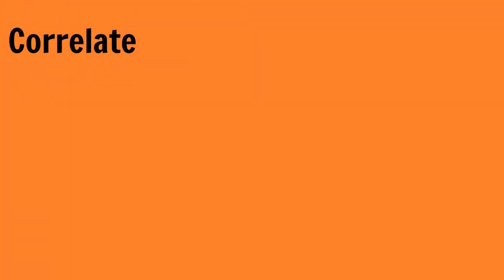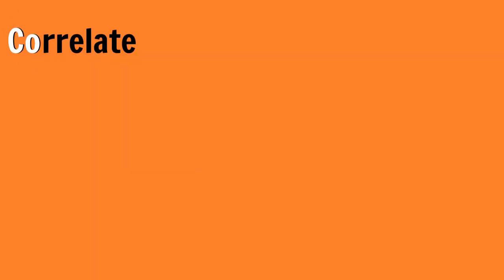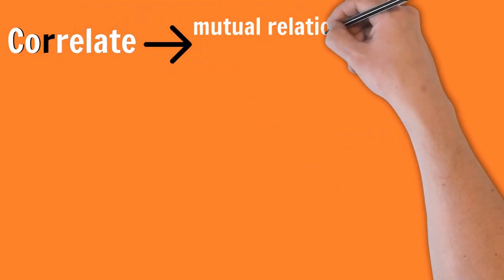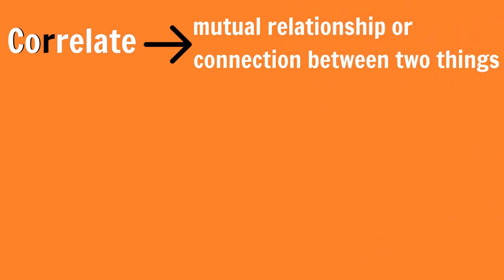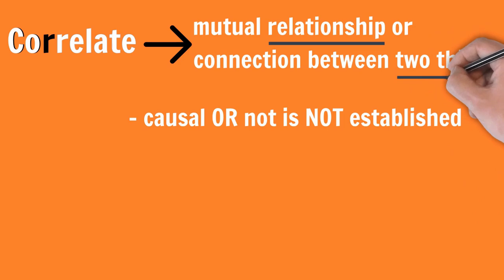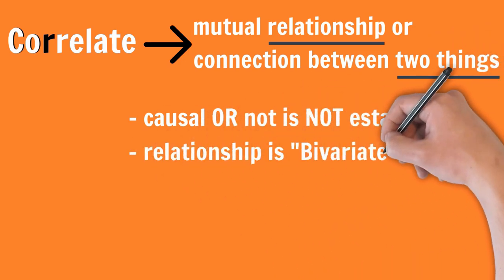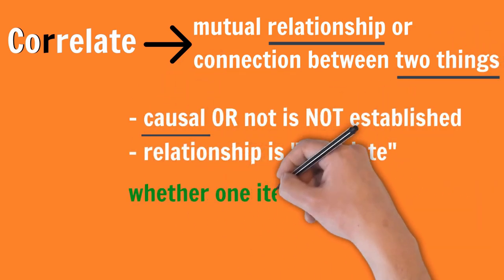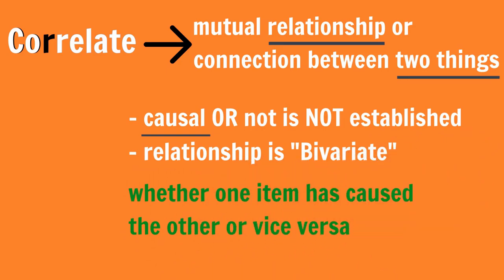Correlation comes from the word correlate, which when split up is a combination of co and relate. It means mutual relationship or connection between two things. Whether the relationship is causal or not is not established. Two things mean the relationship is bivariate. Causal means when one event is the cause for the other, a cause and effect relationship.